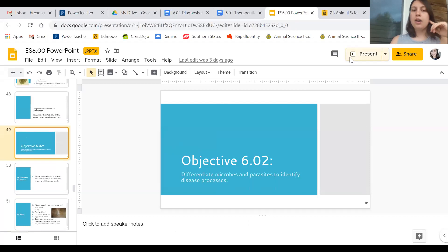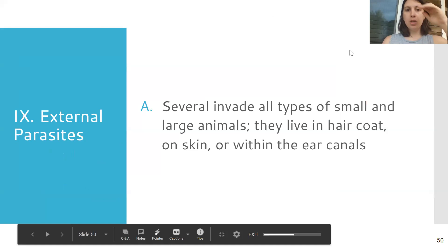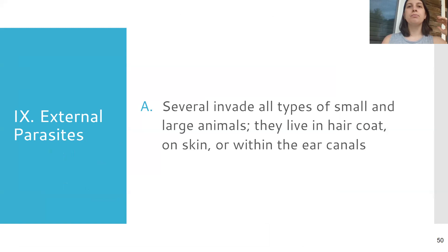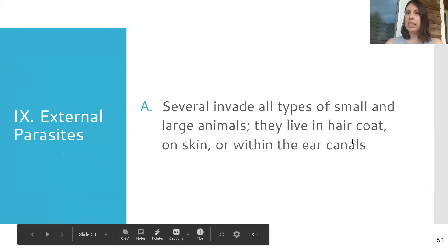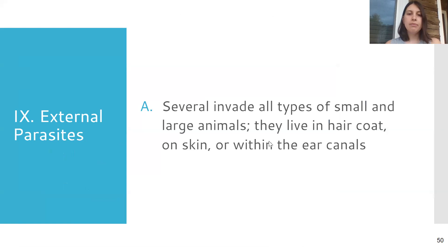We're going to finish up the PowerPoint today with external parasites. We did internal parasites yesterday — tapeworms, ringworms, roundworms, stuff like that. Today we're doing external parasites, meaning they're going to live on the outside of the animal's body, in the hair coat, on the skin. Some of them like ear mites can live in the ears, but that's still considered outside of the body — they're not in the digestive system.